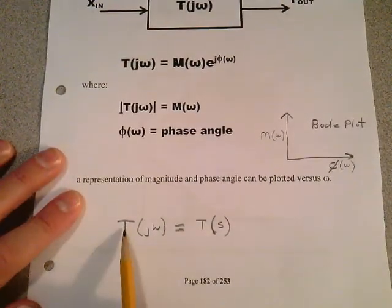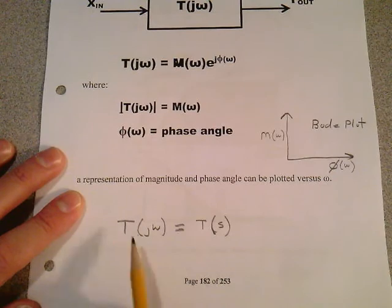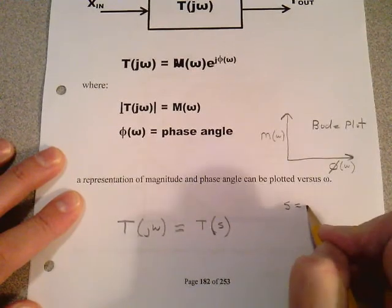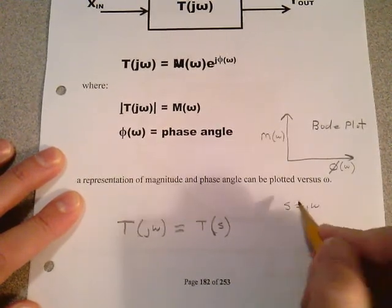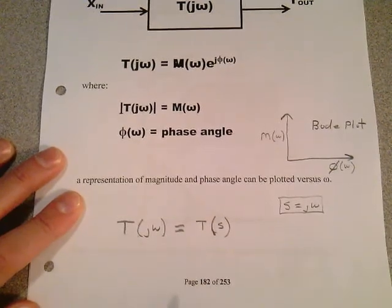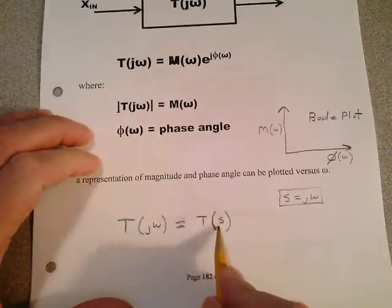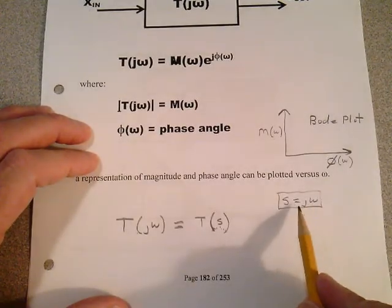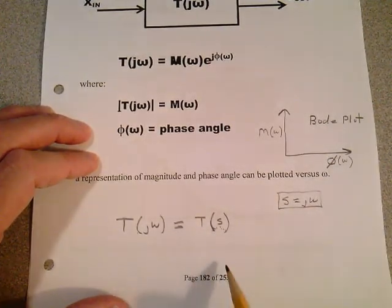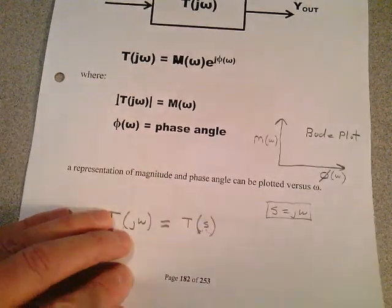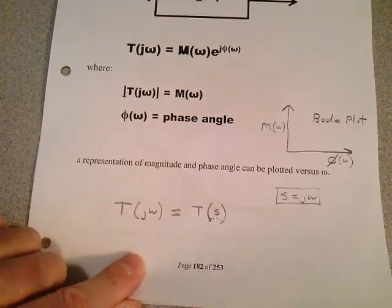All we're going to do is define the transfer function in terms of the complex variable s — remember s is simply equal to jω. So we're replacing jω with s and our transfer functions are going to be T of s. We're going to work everything out in the complex frequency domain, and then we're going to relate it to the time domain. The math is a lot easier when we work in the complex frequency domain.